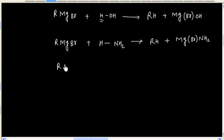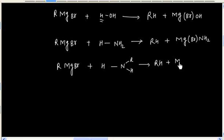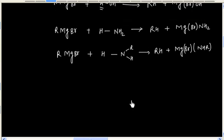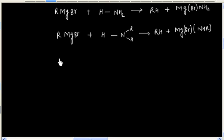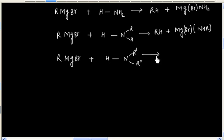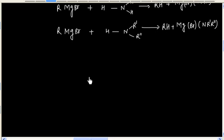We can have derivatives of ammonia — same reaction. This is a primary amine; we can have a secondary amine also. So in all cases we have an acid-base reaction. Grignard reagent is acting as a base, and another compound that has acidic hydrogen is acting as an acid.